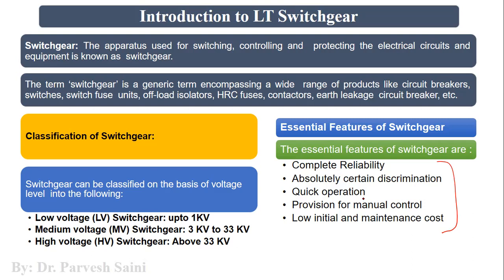There should be a provision for manual control. If for any reason automatic control does not work, or if automatic tripping of the circuit breaker does not happen, there should be a provision to trip it manually and make the disconnection through manual control. It should also be cost effective, with very low initial cost and very low maintenance and running cost.